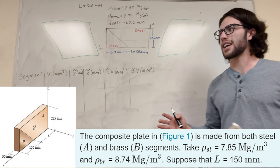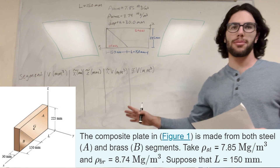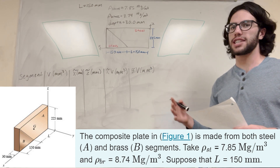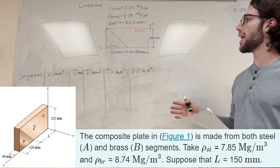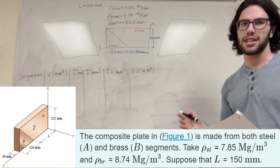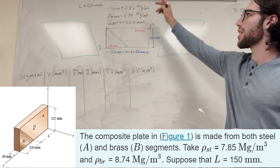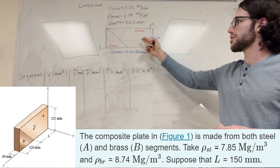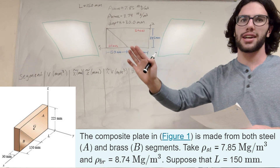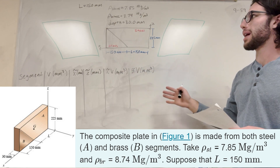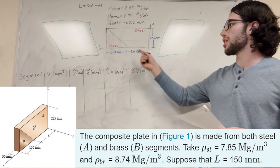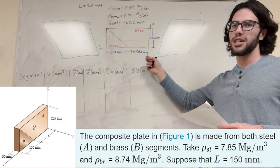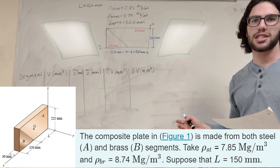What's up, Cal gang? So we've got a statics problem here. I have the image up. We have this brass and steel rectangle that has a little triangle made out of brass. It wants us to find the centroid of this. We're given the densities. I drew this in 2D, but it also goes 30 millimeters back. In this question, the length of this segment is 150 millimeters, so make sure to account for that if your numbers are different. Let's get started.